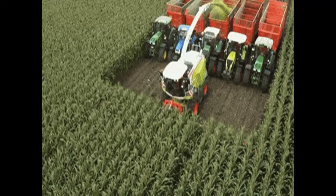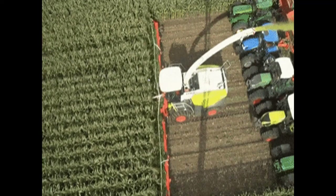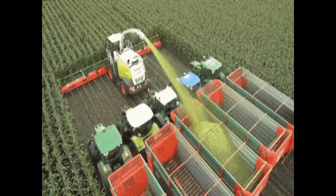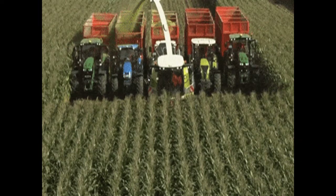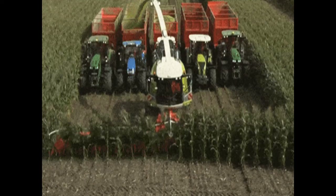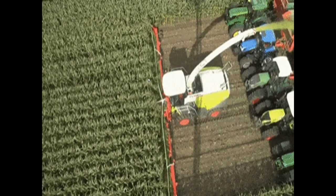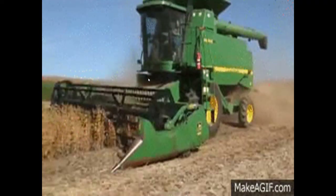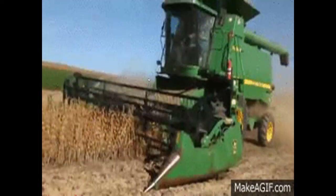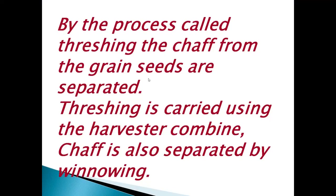Crops have a shaft or outer covering that needs to be removed. Sometimes the machine itself separates the shaft from the grain. The process of separating the shaft from grain seeds is called threshing, carried out using the harvester combine. The shaft is also separated by winnowing.